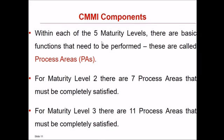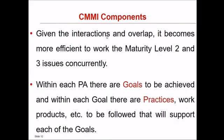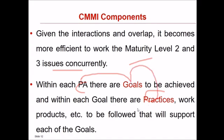Within each of the five maturity levels, there are basic functions called process areas (PAs). From maturity level two, there are seven process areas that must be completely satisfied. For maturity level three, there are eleven process areas. Given the interaction and overlap, it is more efficient to work on level two and level three issues concurrently. Within each process area there are goals to be achieved, and within each goal there are practices to be followed.